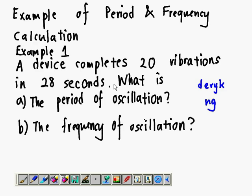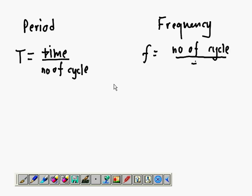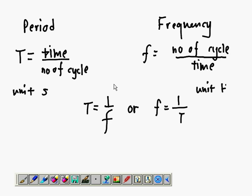Let's look at one example of period and frequency calculation. What's the difference? Period T is time taken divided by number of oscillations. If you want T, period time is on top. Frequency is number of oscillations divided by time. They have a relationship: T equals 1 over f, or f is 1 over T. The unit for period is seconds, and the unit for frequency is hertz or s to the negative 1.